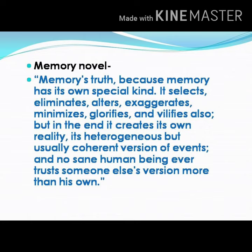Whenever this question of historic inaccuracy is raised, Rushdie answers that it is based on memory and memory cannot be linear — it cannot follow a chronological pattern. In the novel, Salim says: 'Memory is truth because memory has its own special kind. It selects, eliminates, alters, exaggerates, minimizes, glorifies and vilifies also. But in the end, it creates its own reality, its heterogeneous but usually coherent version of events. And no sane human being ever trusts someone else's version more than his own.'